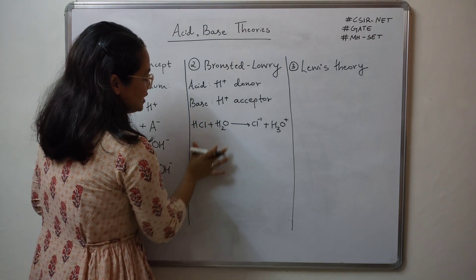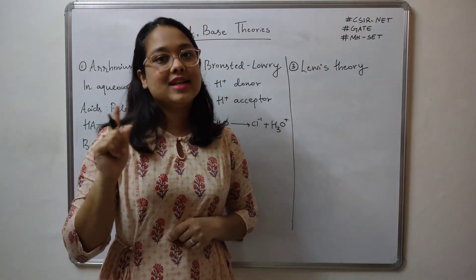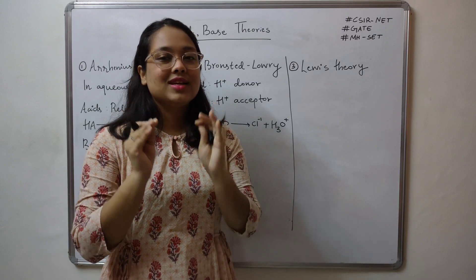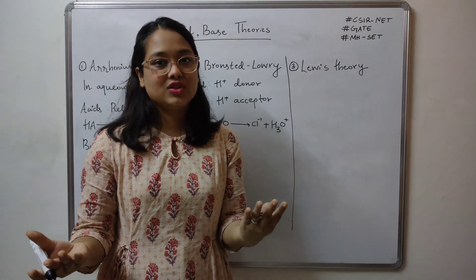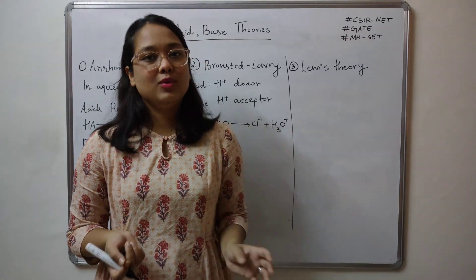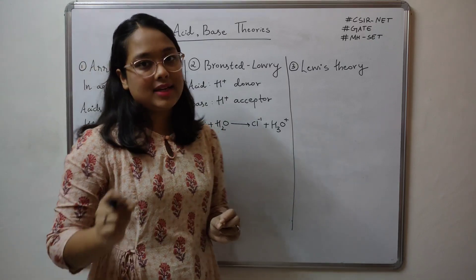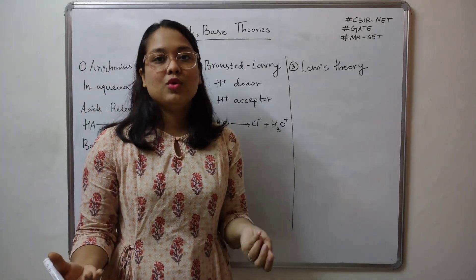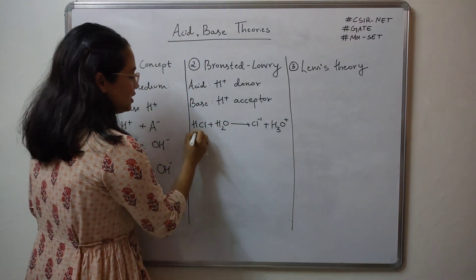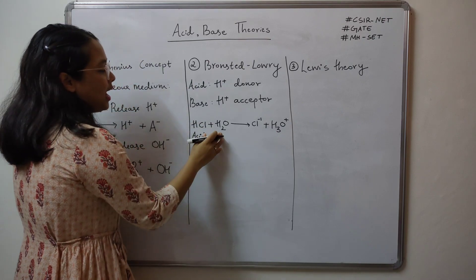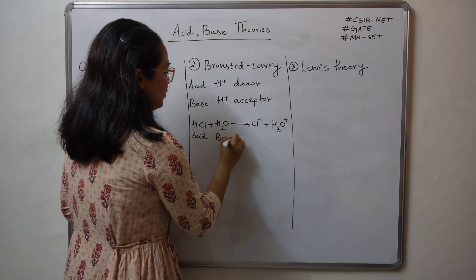There is an important concept of identifying something known as conjugate acid and conjugate base. Many students are confused about how to identify which is a conjugate acid and which is a conjugate base. Here is a simple method: when you have such reactions, first assign your acid and base — check who has donated the proton and who has accepted it. Over here, HCl has donated, so this is acting as the acid, and water has accepted, so this is acting as the base.